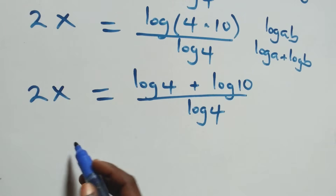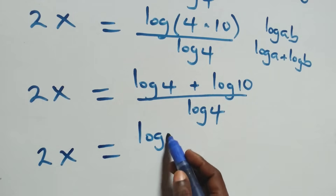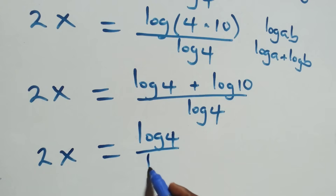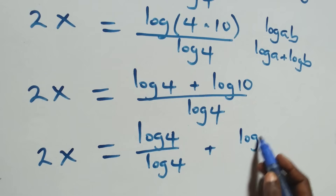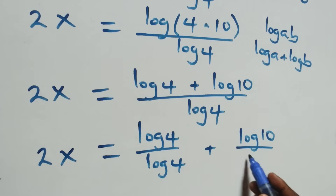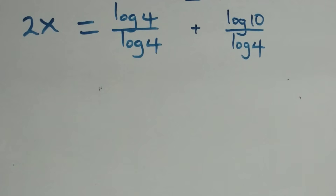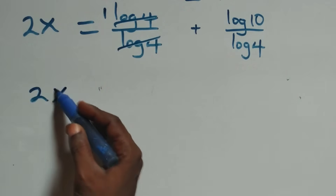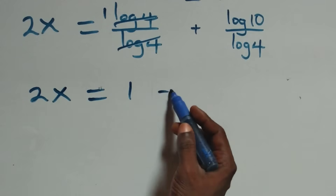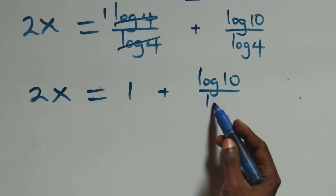We separate this into two fractions: 2x equals to log 4 over log 4 plus log 10 over log 4. Then log 4 cancels each other, giving 1, so we have 2x equals to 1 plus log 10 over log 4.